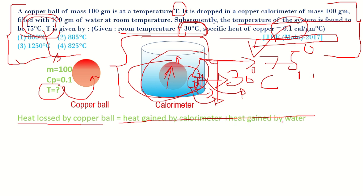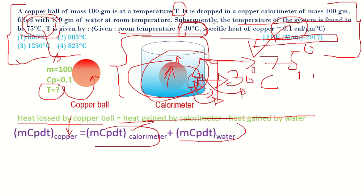The heat lost by copper ball is given by m·Cp·ΔT and heat gain by calorimeter is also given by m·Cp·ΔT and heat gain by water is also given m·Cp·ΔT. Let us substitute the values to get the answer.